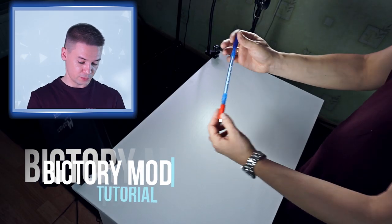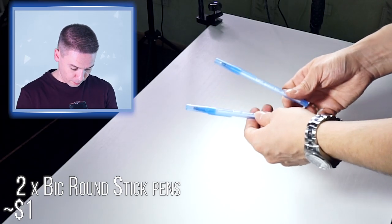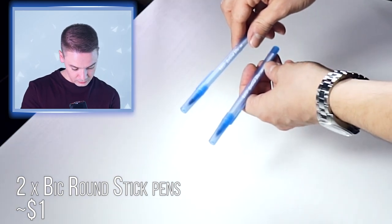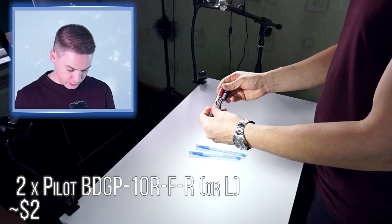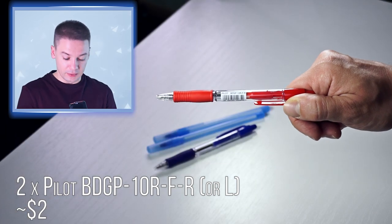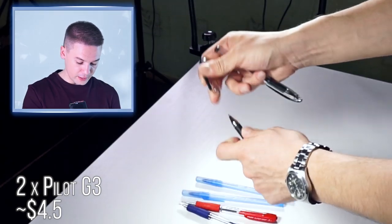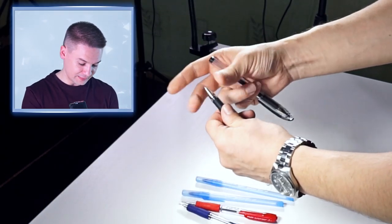But before that, make this. To make it you will need just the following spare parts. First of all, two Victory board point pens, big round stick, two Pilot BPGP10RFR or FL, very common pens you can find them in many different stationery shops, Pilot G3 pens, or any other pen with metal tips.